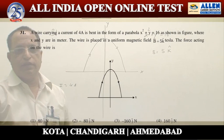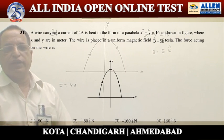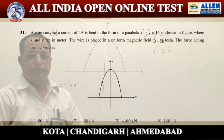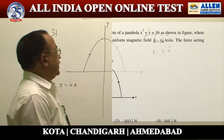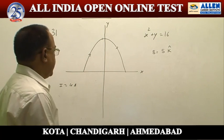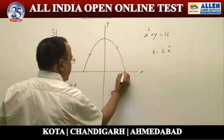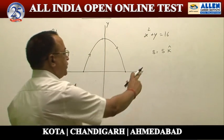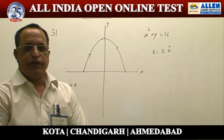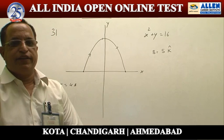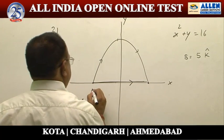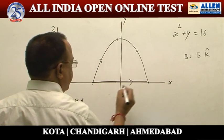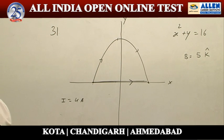Problem number 31 is related to the force on a current-carrying wire placed in a magnetic field. This wire is in the shape of a parabola whose equation is x² + y = 16. The starting point is somewhere here and the last point is here. Since the field is uniform, we can join the initial point to the final point to get the effective length.